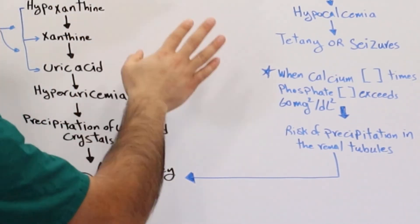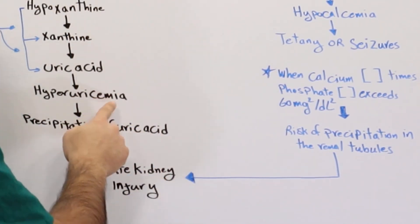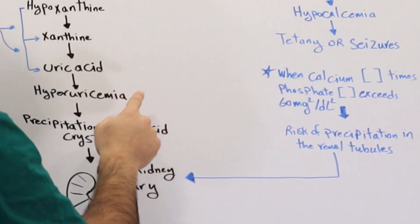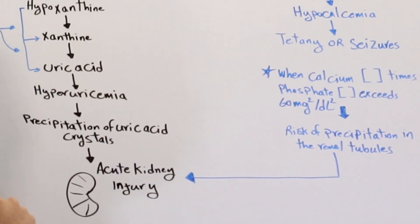So far we have high uric acid, high phosphate, and low amounts of calcium in the body.